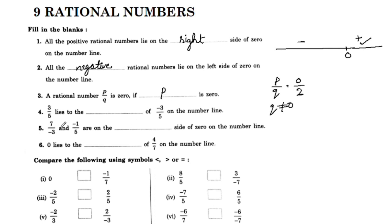3 by 5 lies to the right of negative 3 by 5 on the number line. Negative 3 by 5 lies to the left, and 3 by 5 lies to the right.